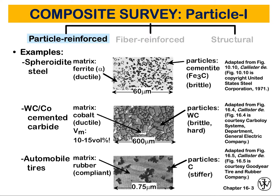The distinction between these two is based on the reinforcement and strengthening mechanism. In large particle composites, we have two phases composed of larger particles. In dispersion strengthened composites, a small portion of one phase is dispersed within a larger matrix phase.